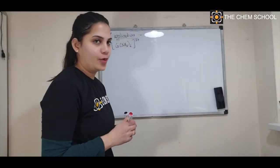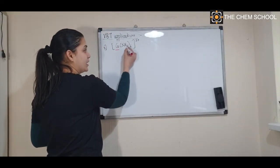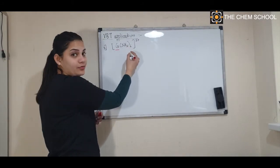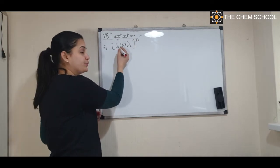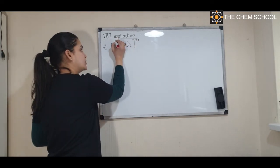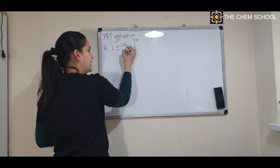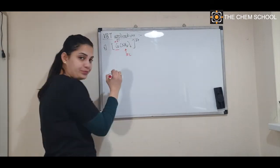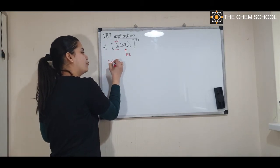Let's start solving the first complex: [Co(NH₃)₆]³⁺. First, find the oxidation number of cobalt. Ammonia is a neutral ligand, so for a neutral ligand the overall charge equals the charge of the metal. Therefore, cobalt's charge is +3. Ammonia is also a strong field ligand.